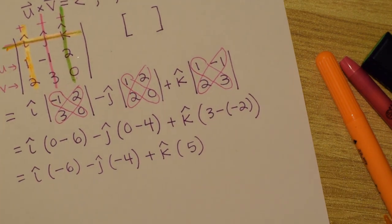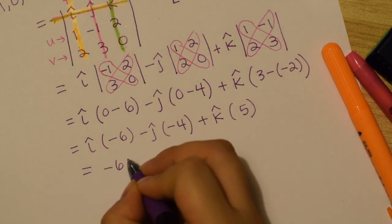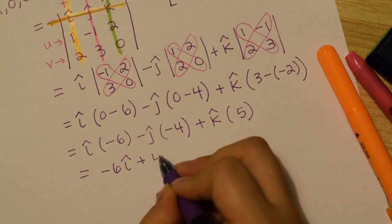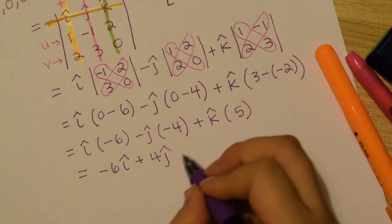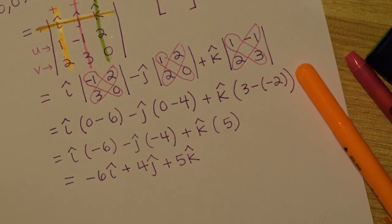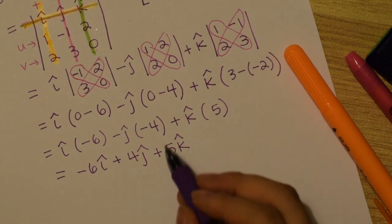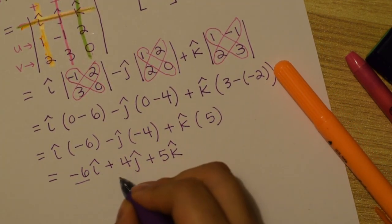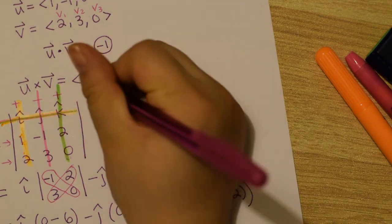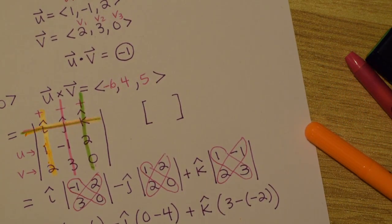So the minus minus becomes a plus. And now I'm going to just put the numbers in front. So negative 6i, the negative j times negative 4 is plus 4j plus 5k hat like this. That's it. So notice we have something i plus or minus something j plus or minus something k hat. And so we just plop these coefficients into our answer. So negative 6, 4, 5 is our cross product.